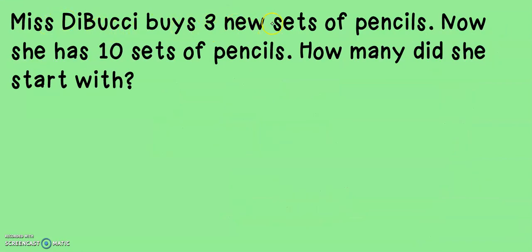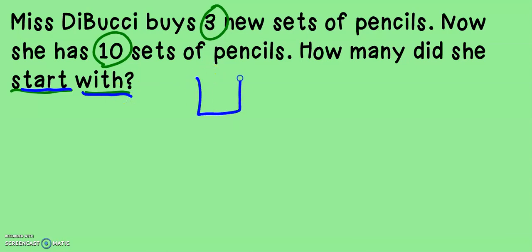Miss Debussy buys three new sets of pencils. Now she has ten sets of pencils. How many did she start with? Here's another one of those problems — we are missing the number that we're starting with. That means it's our first number that we're missing. We don't know our starting number. Miss Debussy buys three new sets of pencils. If I'm buying new pencils, do you think I should add or subtract? I'm going to add because if I'm buying them, I'm getting more.